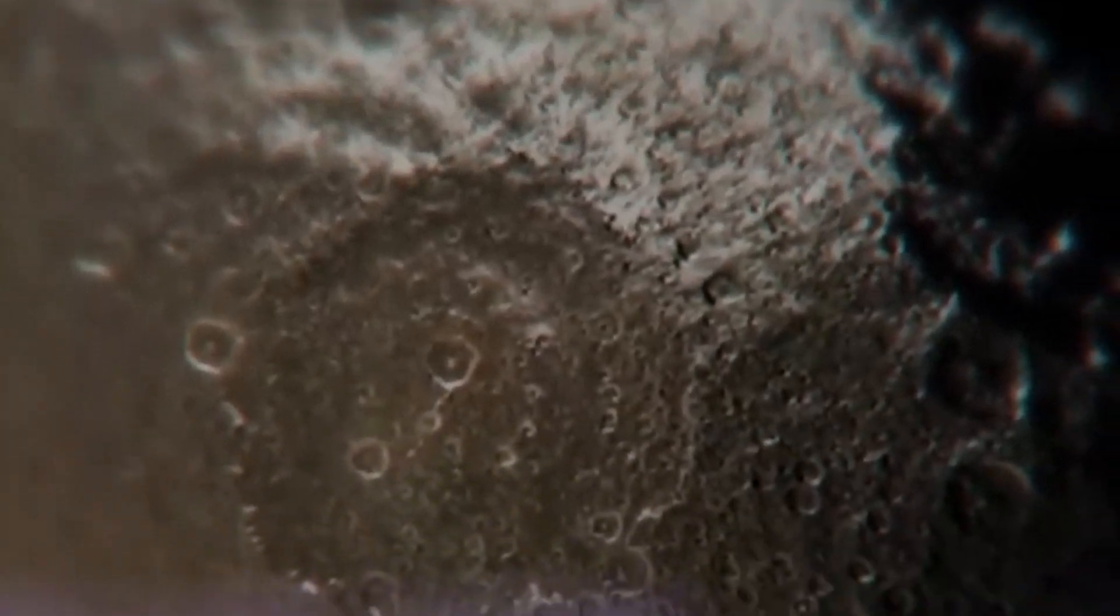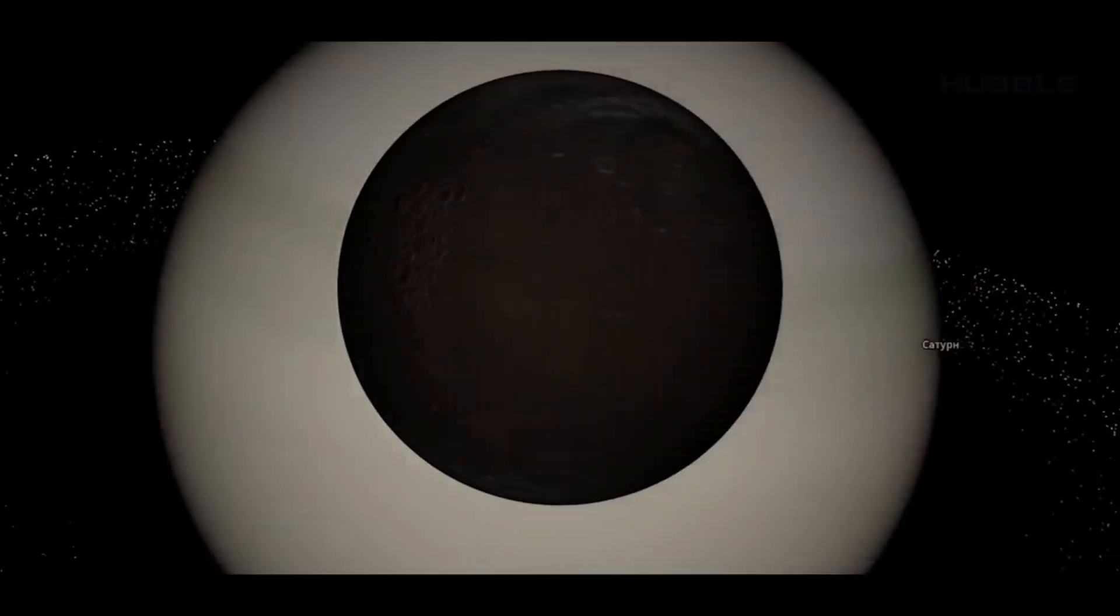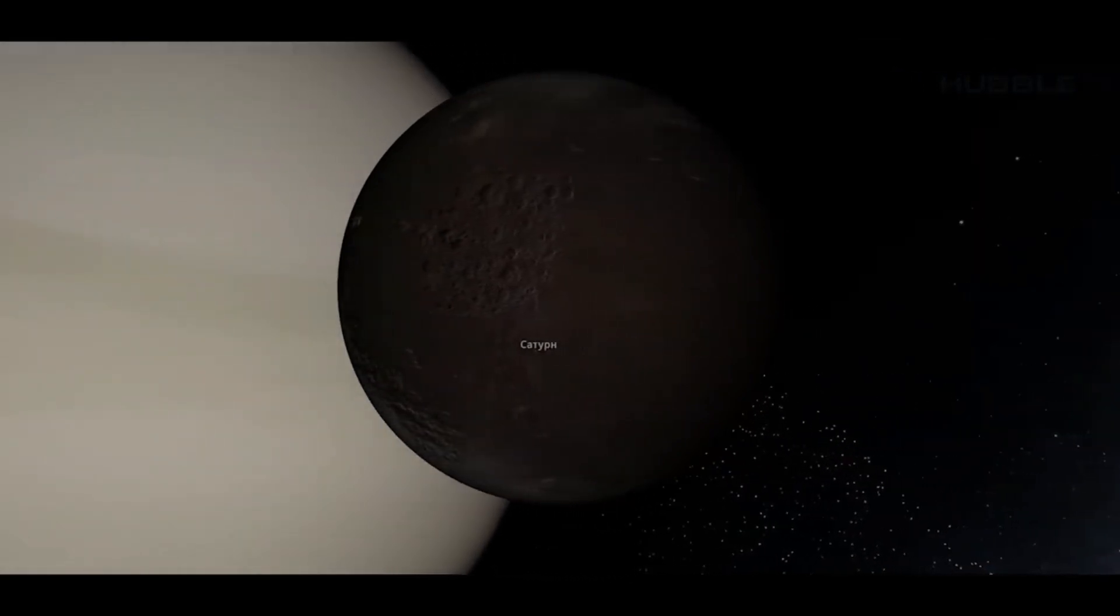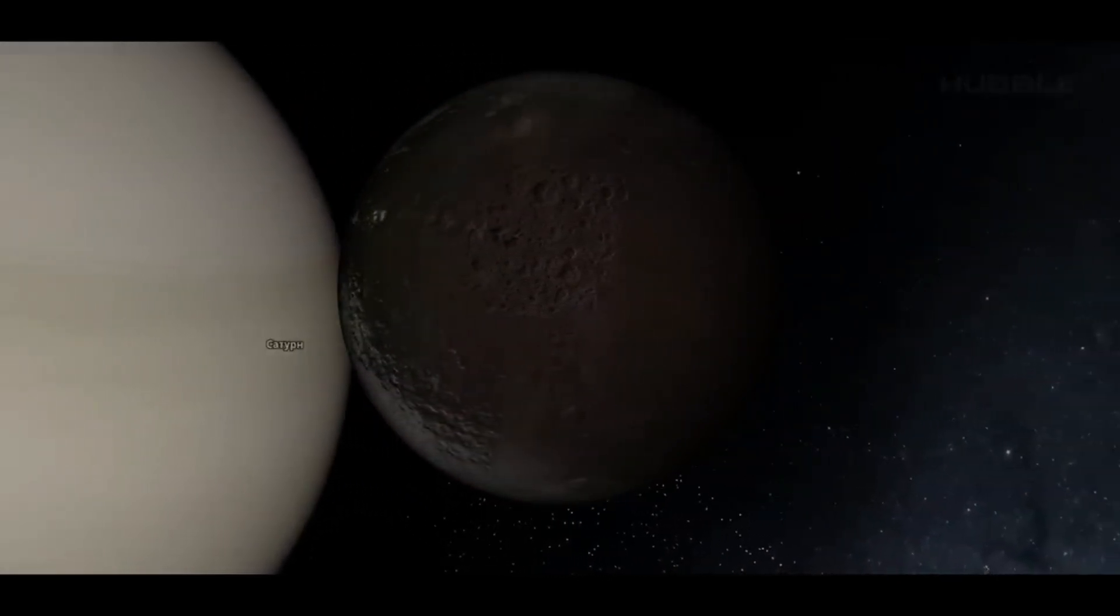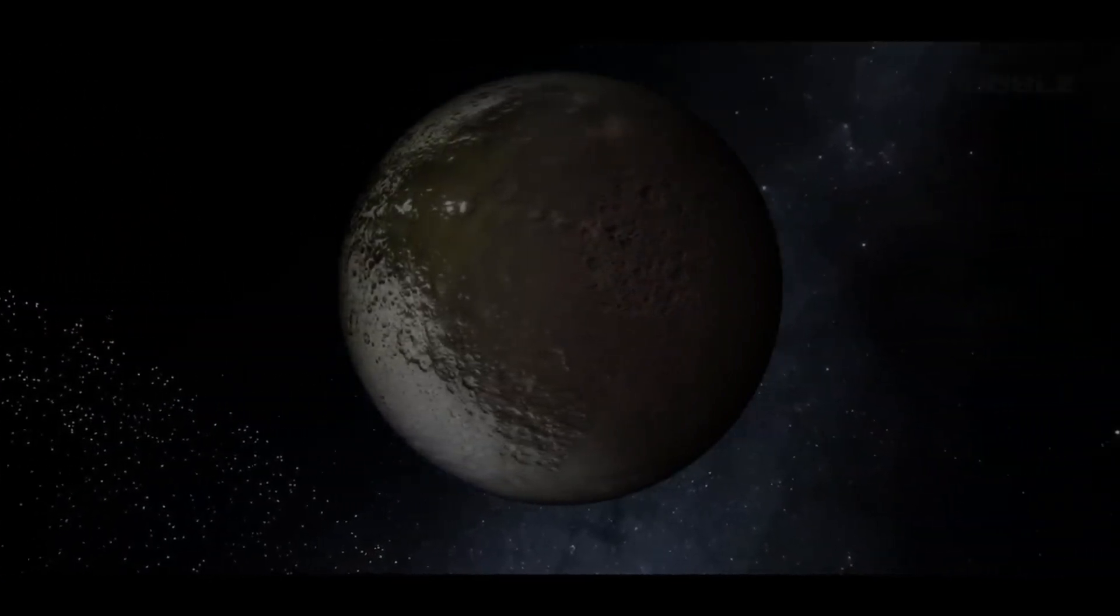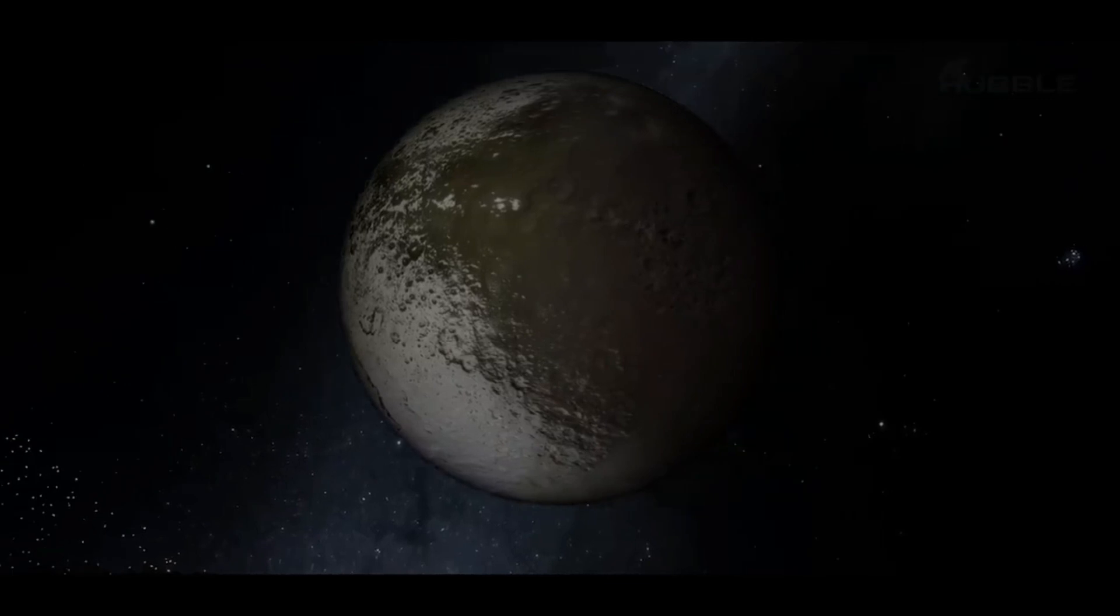Thanks to Cassini, we have images where we can see some of the huge craters. Some of them are over 350,000 meters in diameter. The largest of them is a crater called Turgis, which is located in the dark part of Iapetus. It has quite high edges, about 15,000 meters, so this crater can be considered one of the largest in the solar system.